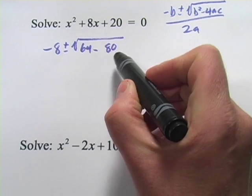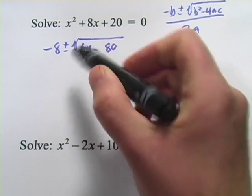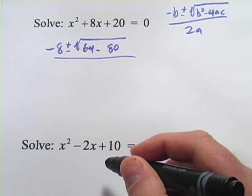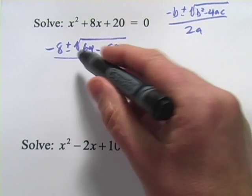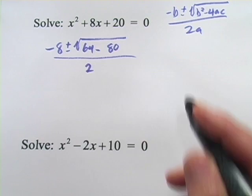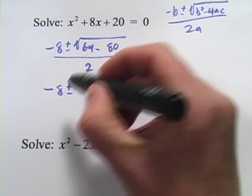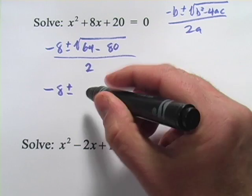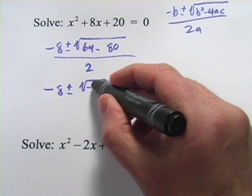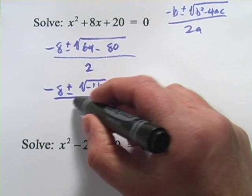What you'll see is you're going to get a negative number under this square root sign, and that's where our complex roots come from. This is all over 2 times a. Well, a is 1, so that's just over 2. So we've got negative 8 plus or minus, well, 64 minus 80, that's the square root of negative 16. That's all over 2.